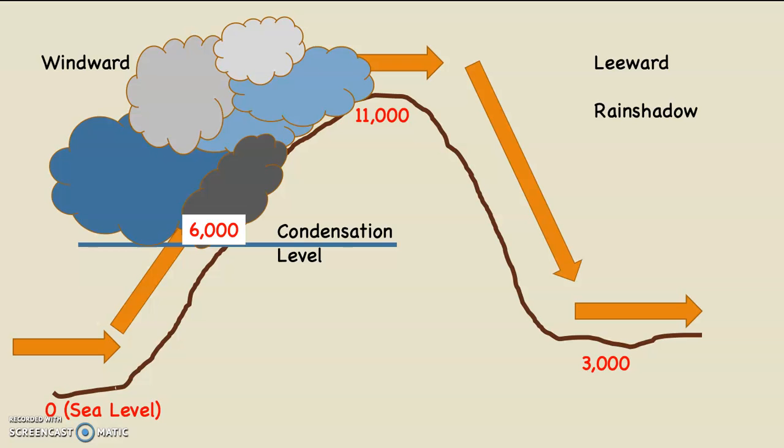I just put some elevations on here because we're going to do a math problem. On the bottom left-hand side you can see zero, which is sea level. The condensation level in this problem is 6,000 feet on the windward side of the mountain. The top of the mountain is 11,000 feet high. Over on the right-hand side, there's a leeward valley at 3,000 feet. Our starting temperature is 72 degrees. An air parcel at 72 degrees and sea level is going to rise up the mountain, reach its condensation level at 6,000 feet, continue to rise to 11,000 feet, and then descend into the leeward valley at 3,000 feet.